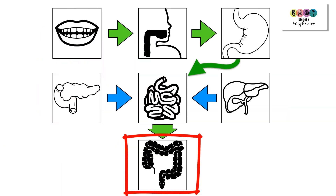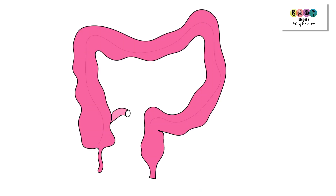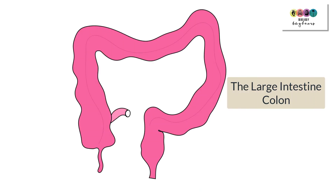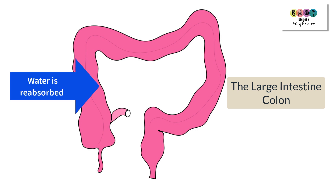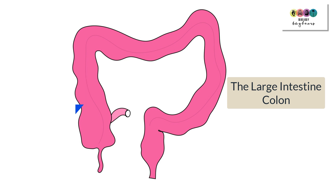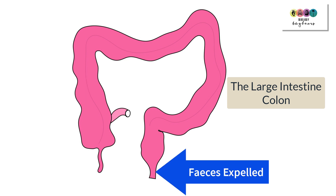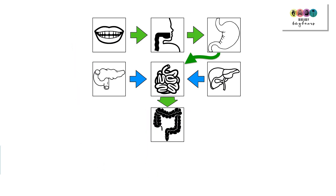When we leave the small intestine, the only material entering the large intestine is that which has been undigested or unabsorbed. One important process in the large intestine, or colon, is the reabsorption of water. The remaining material that continues through the large intestine becomes faeces, which is eventually expelled through the anus. That is a basic outline of digestion.